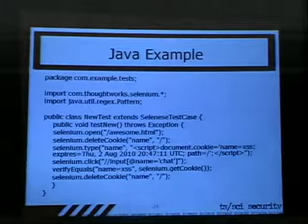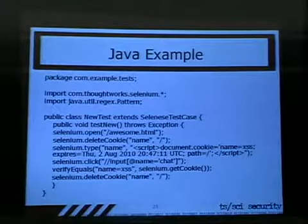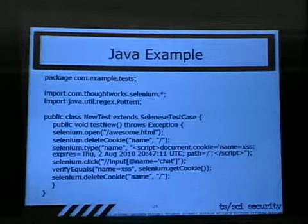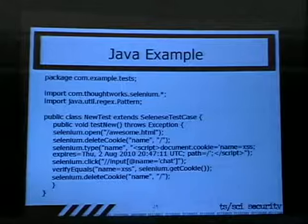Here's a Java example. Selenium will export your HTML test to Java, and that's what our tests look like. It's really simple. You can fire these off to developers and they can integrate it into their integration tests. You can see the Selenium click where it has the XPath right there — that's the XPath for the test.